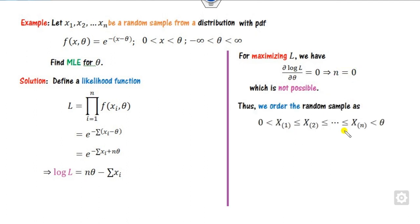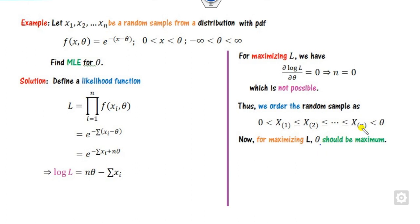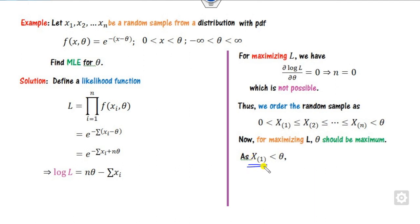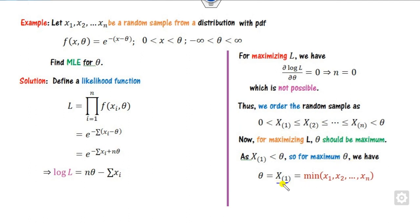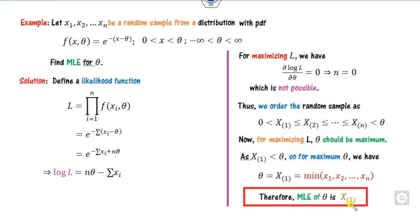We can arrange them using the order statistics. L will be maximum when, since theta appears with a positive sign, theta should also be maximum. When theta will be maximum from the expression, since the xi's are bounded, theta will be maximum at X(1) — the minimum order statistic. Therefore the MLE of this parameter theta is X(1).